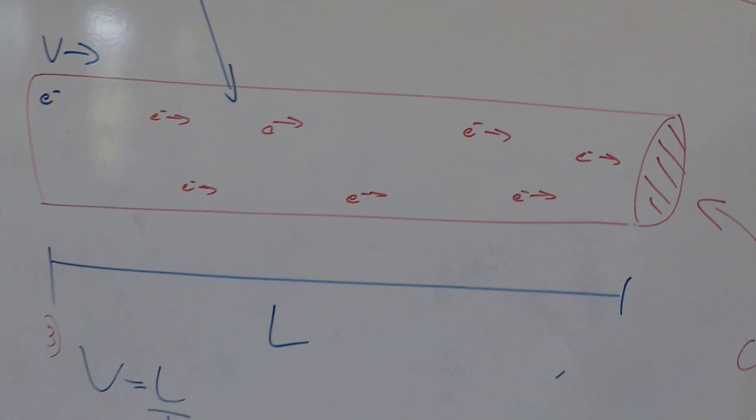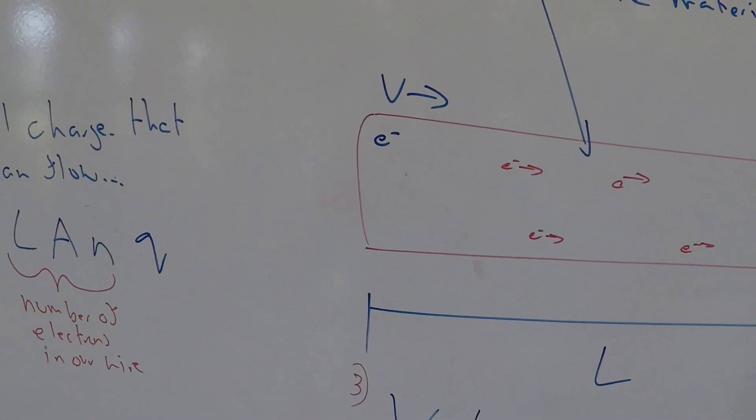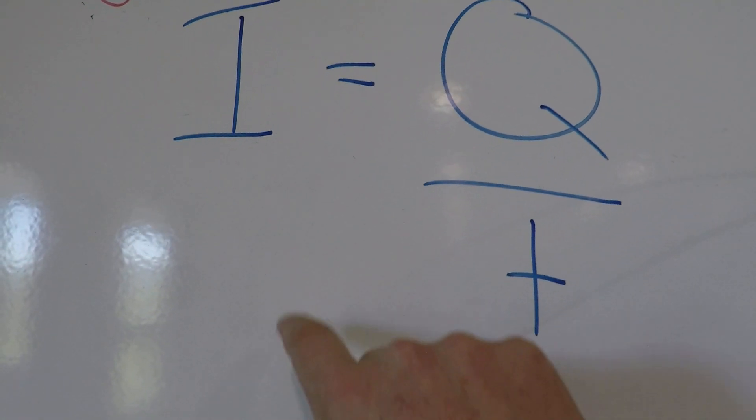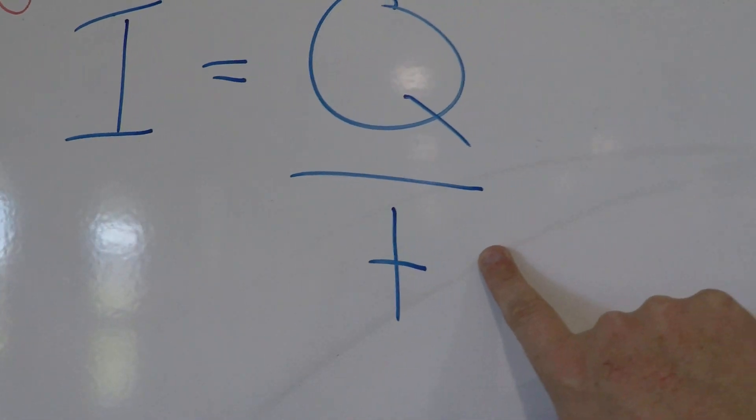So where did this equation come from? Well, let's think about our equation here, so this is something you'd seen at IGCSE, so I equals Q over T.